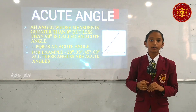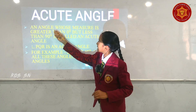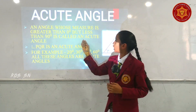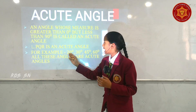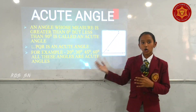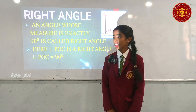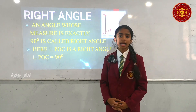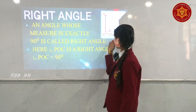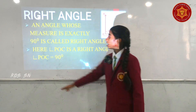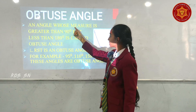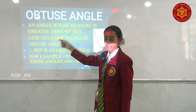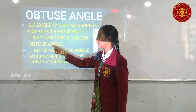Now I will explain about acute angle. An angle whose measure is greater than 0 degrees. My topic is Right Angle. An angle whose measure is exactly 90 degrees is called Right Angle. An angle whose measure is greater than 90 degrees but less than 180 degrees is called Obtuse Angle.